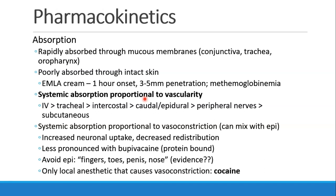One thing that we do to decrease systemic absorption is we can cause vasoconstriction, and for that reason we often mix our local anesthetics with epinephrine. This has a few benefits. First, it increases uptake of the anesthetic into the nerve because vasoconstriction limits the blood flow to that area. We get decreased redistribution away from the nerve, so the local anesthetic sits in that spot longer because there isn't much blood flow due to the vasoconstriction. Some say that there isn't as much vasoconstriction with bupivacaine, maybe because it's protein bound.